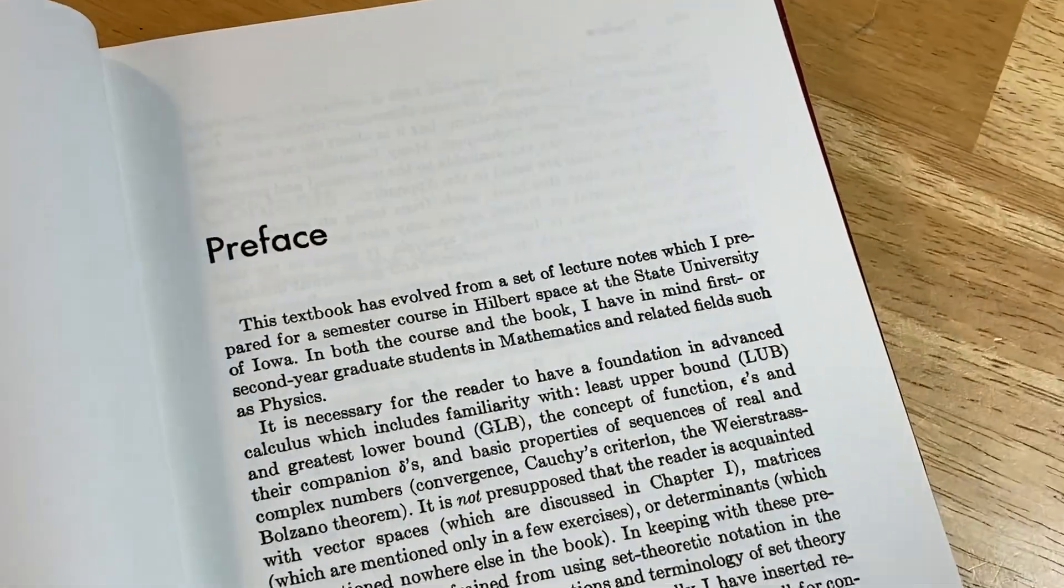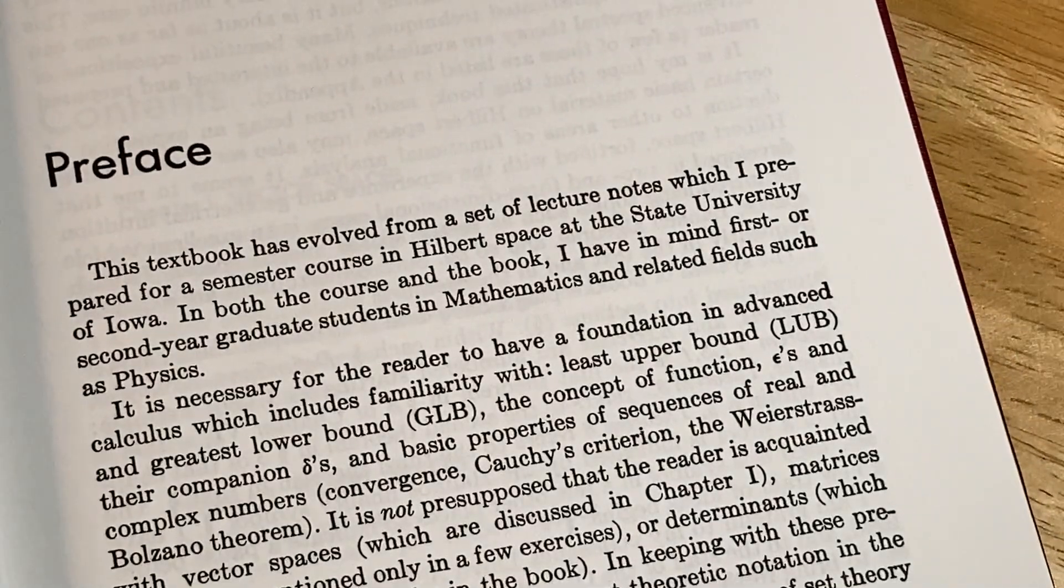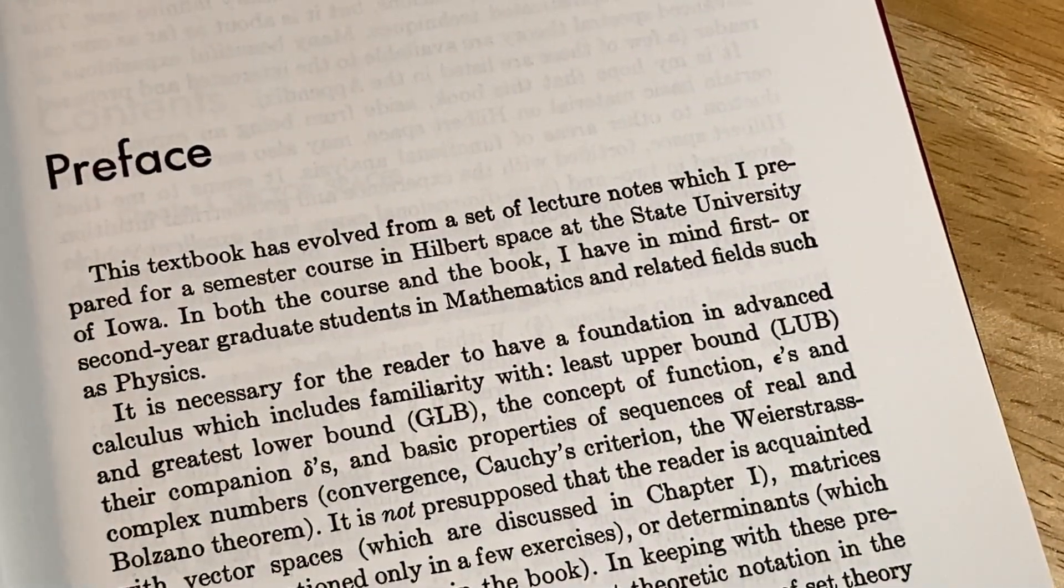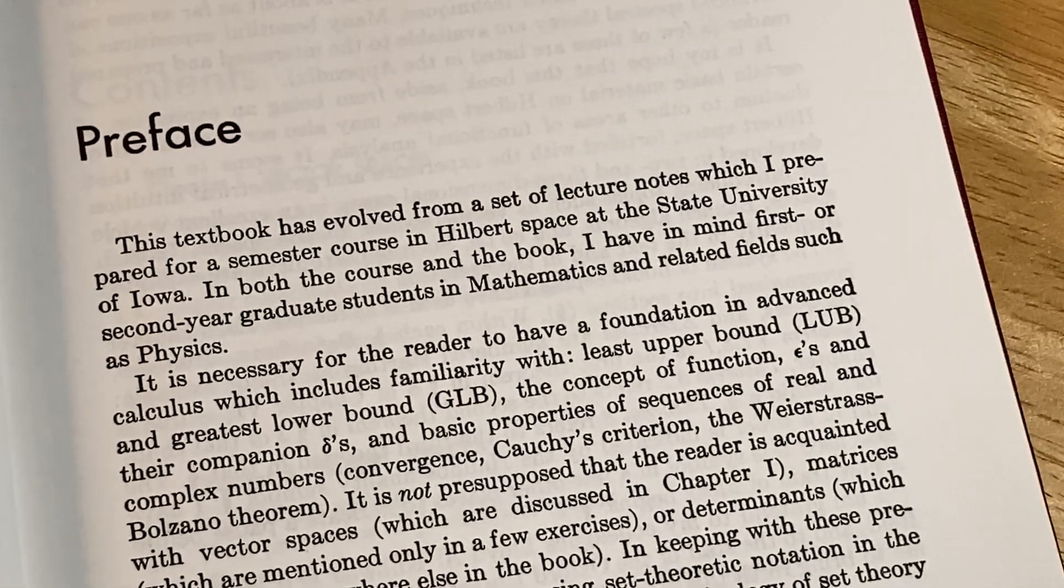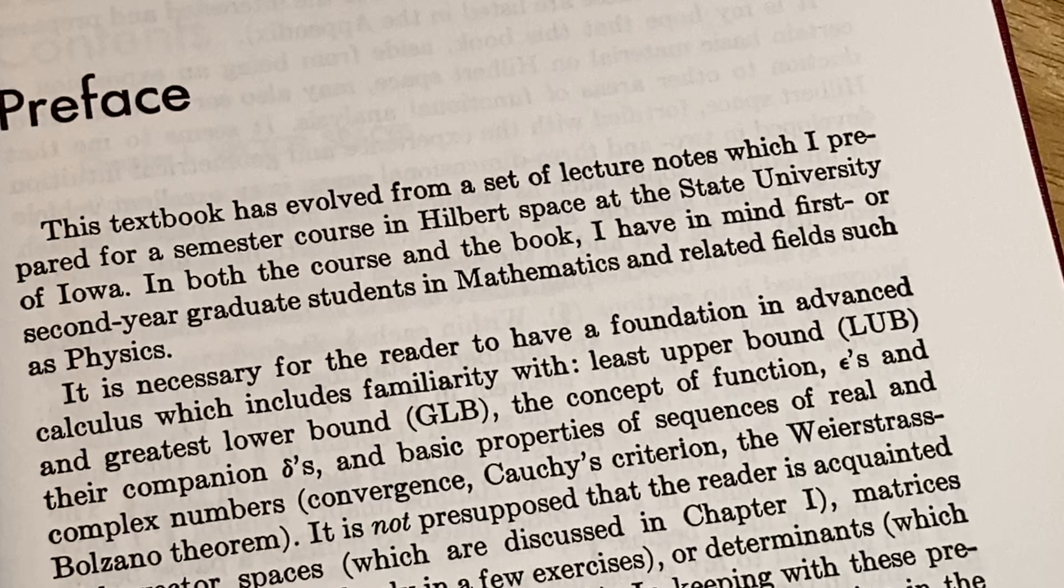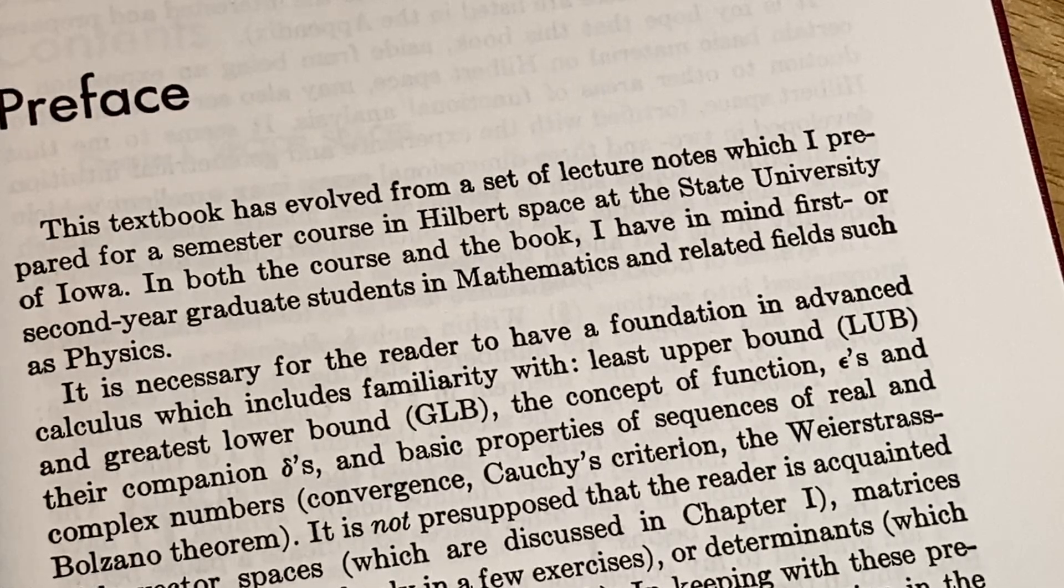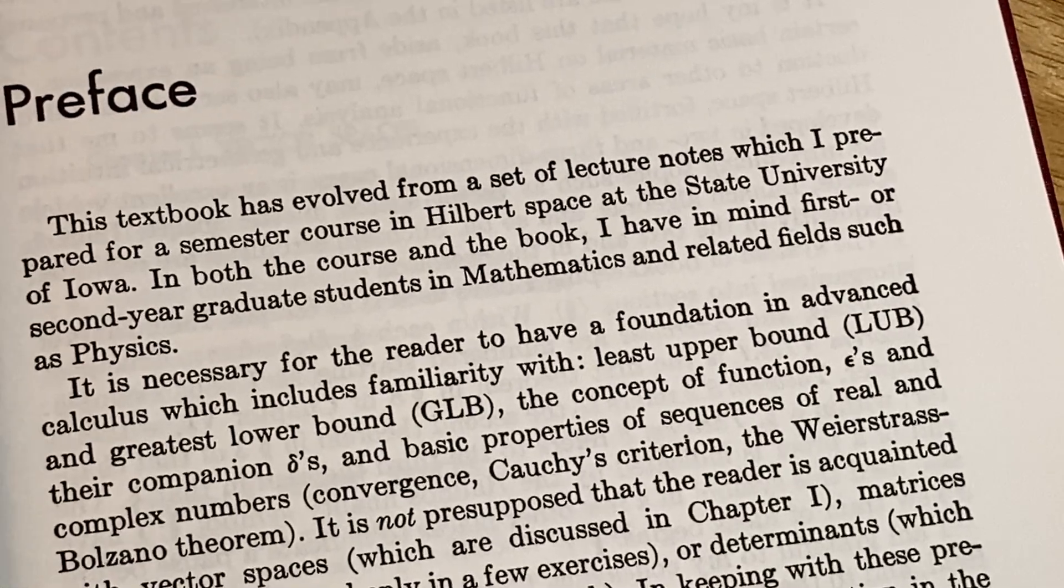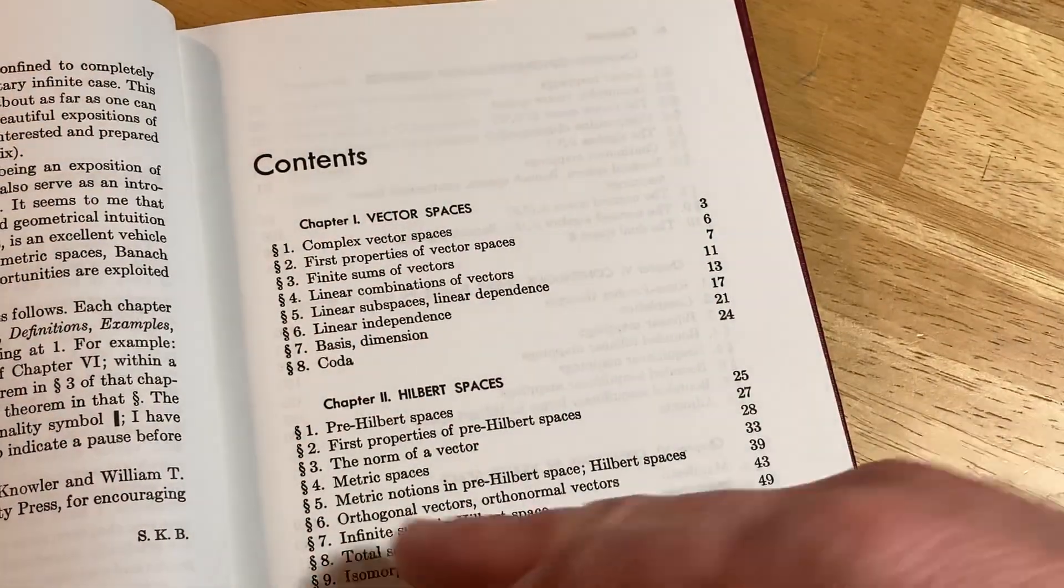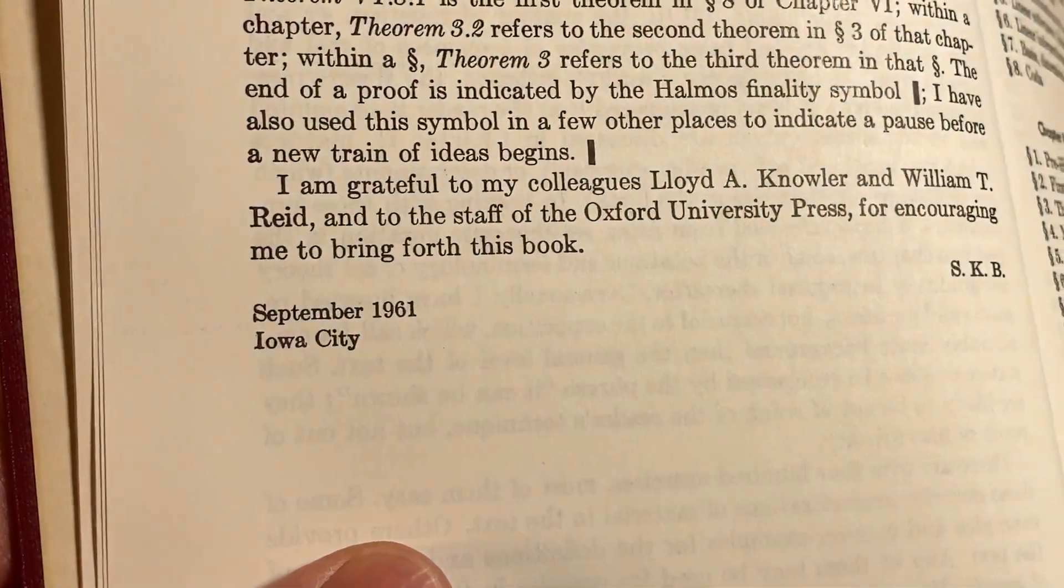And to Gene Arnold. This textbook has evolved from a set of lecture notes which I have prepared for a semester course in Hilbert Space at the State University of Iowa. In both the course and the book, I have in mind first or second year graduate students in mathematics and related fields such as physics. And then here he signs it. SKB, September 61, Iowa City.